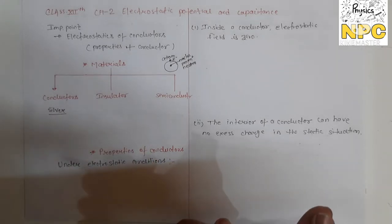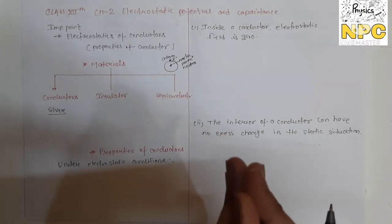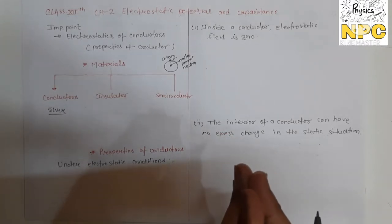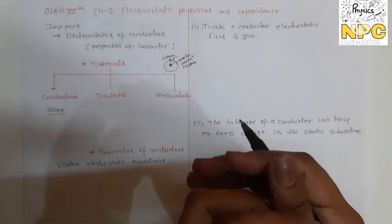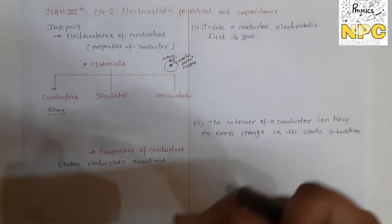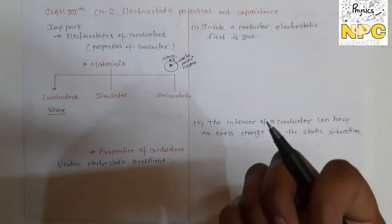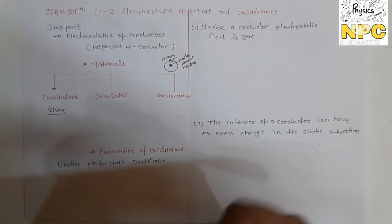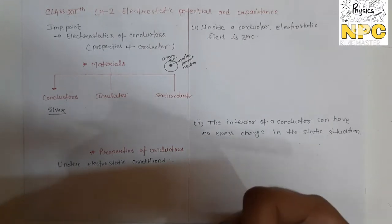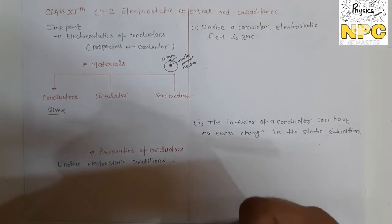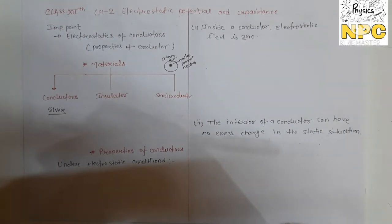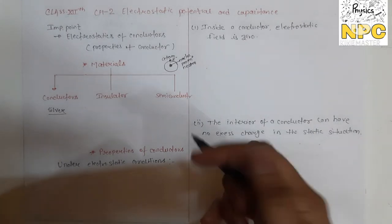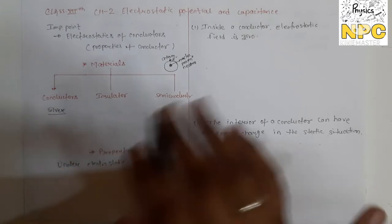The second type is the insulator. In an insulator, the bond between electrons and the nucleus (protons) is strong, so electrons cannot leave their orbit. Because the bonding is strong, electrons cannot leave — therefore insulators have no free electrons.